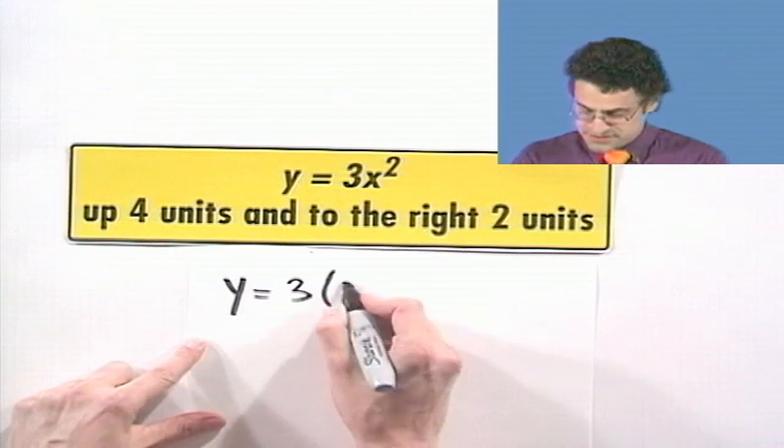And now let's see if we can just have some fun with this. So here's a parabola. y equals three x squared. And let's move it up four units and to the right two units. So to the right two units. That's moving to the east. So I subtract two from the x. And up four units means I add four to the y. Ha! Terrific. Terrific! I love this stuff.